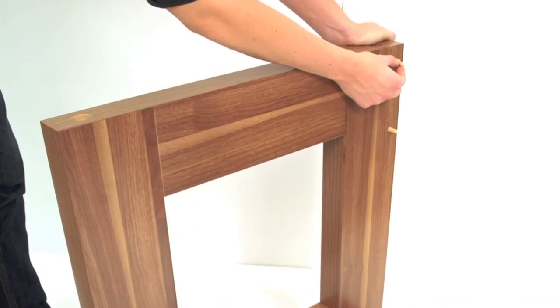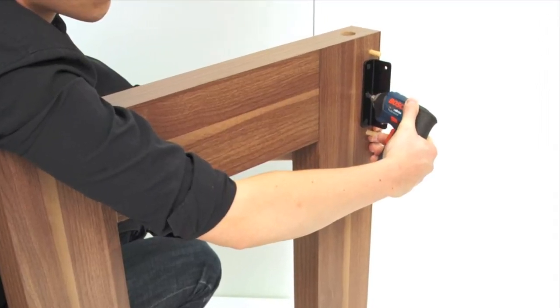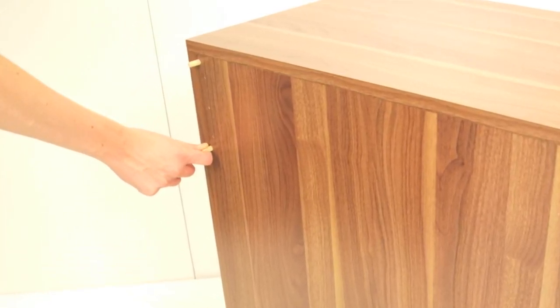Now, insert two wooden dowels into the leg and screw the support bracket into position using screws number 10. Repeat this stage on the drawer box.